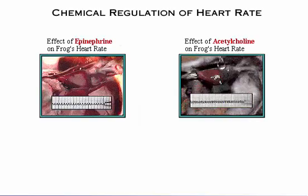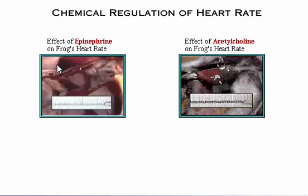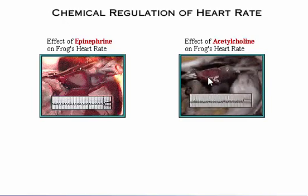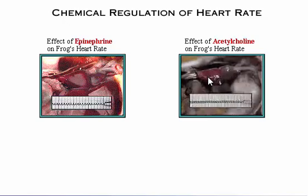To see videos that show the effects of epinephrine and acetylcholine on a frog's heart, click the appropriate picture. After allowing the heart to beat at baseline rate for several minutes, the heart is then given a few drops of a 1 to 1,000 solution of epinephrine. Once a new baseline heart rate has been obtained, a few drops of a 1 to 50 solution of acetylcholine are placed on the heart. Afterwards, the heart rate begins to decrease dramatically within 10 seconds.